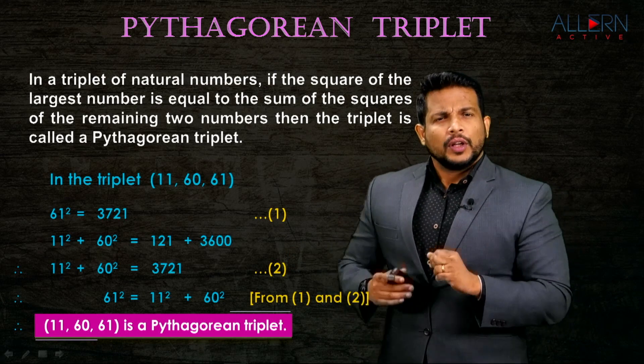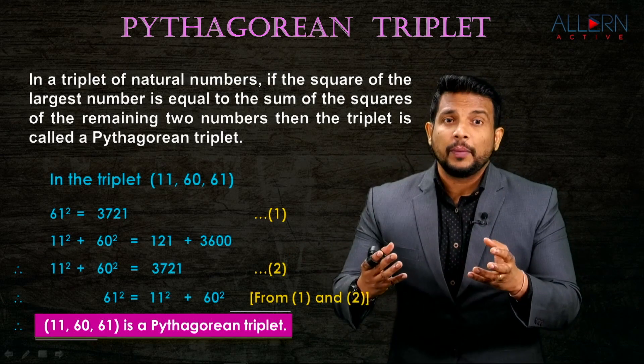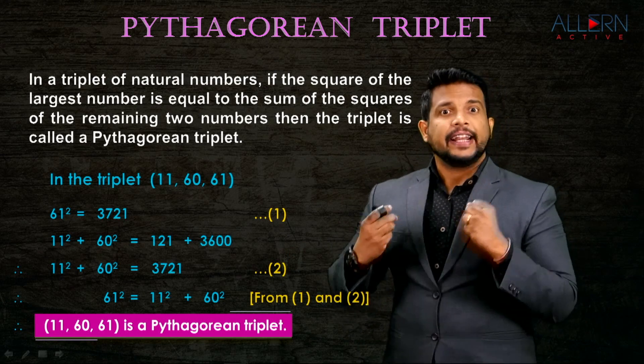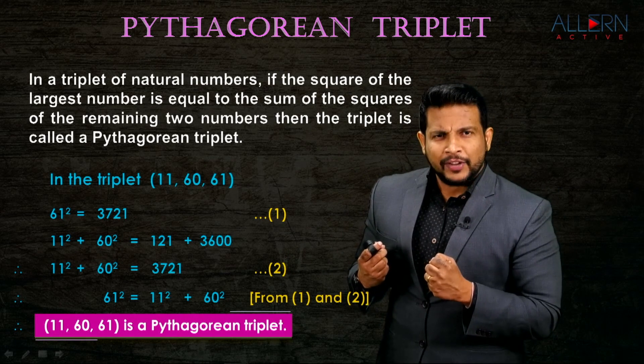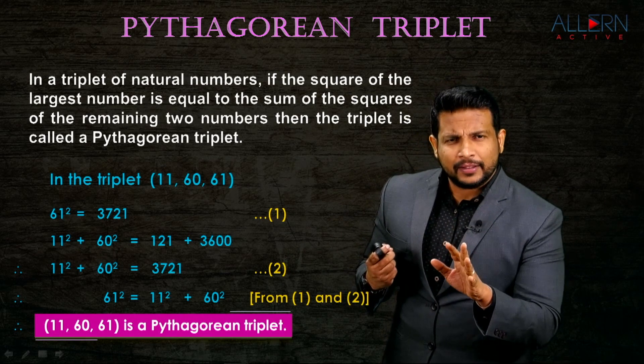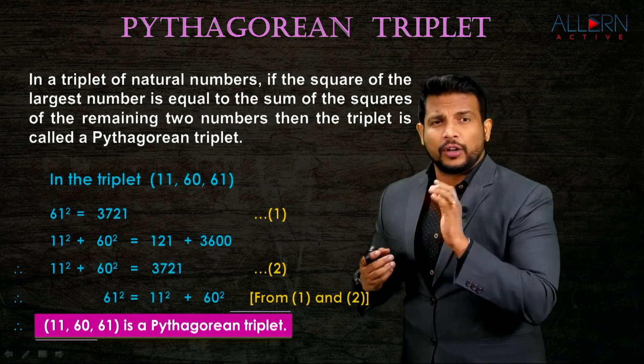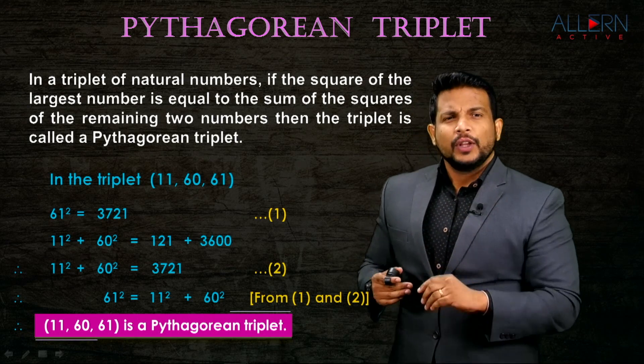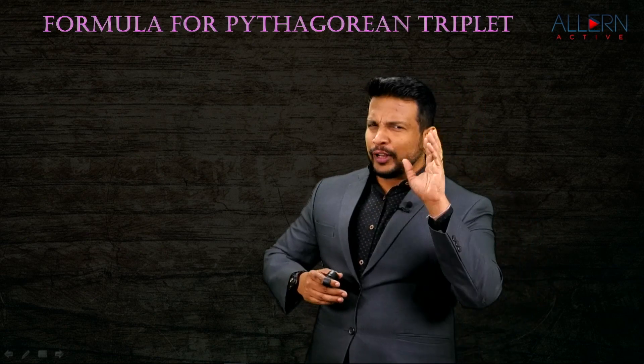Now, you understand that if given a set of three numbers, we can identify whether it is a Pythagorean triplet or not. But suppose you want to form a Pythagorean triplet - how will you do that? There is a way of doing it and there is a formula. I will give you that formula. It is very interesting.